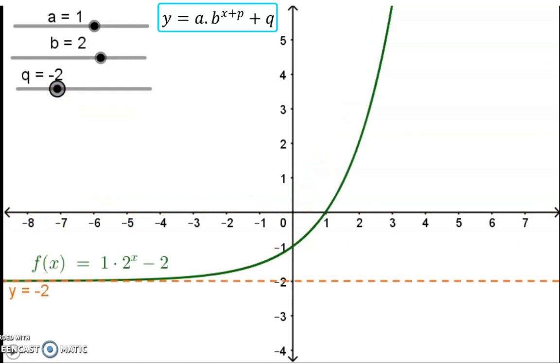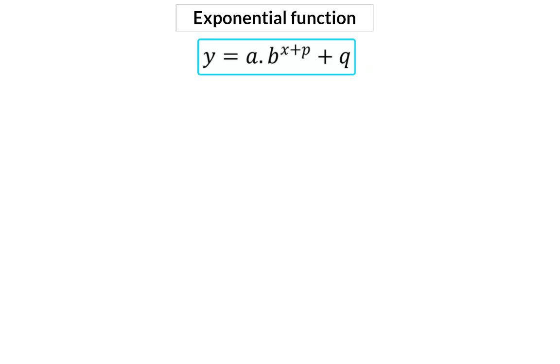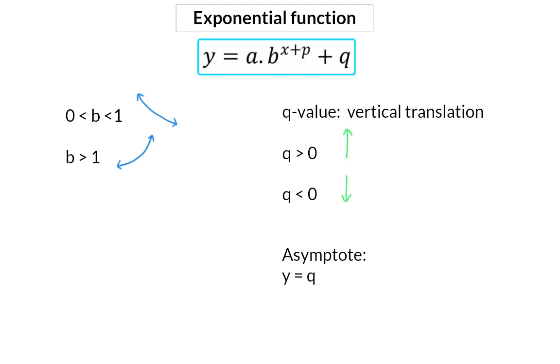An exponential function is not symmetrical and will not have an axis of symmetry. So, to sum up, the b value indicates whether the graph is decreasing if b is between 0 and 1, or increasing if b is bigger than 1. The q value indicates the vertical translation. When the q value is bigger than 0, the graph moves up, and when smaller than 0, it moves down. An exponential function has one asymptote, and that is a horizontal asymptote at y is equal to q.